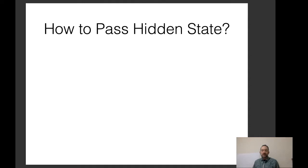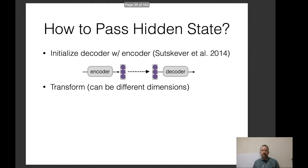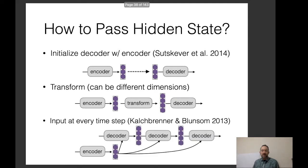There are a few details about how to do this. You can initialize the hidden state of the decoder with that of the encoder. You can also take the encoder's hidden state, transform it, and pass it to the decoder or input it at every time step. The key concept is that you have an encoder that calculates a hidden state and passes it to the decoder, which then predicts the probability of the output.